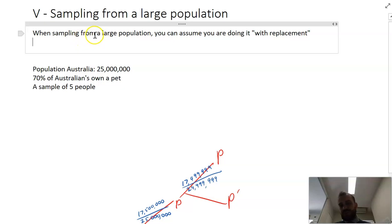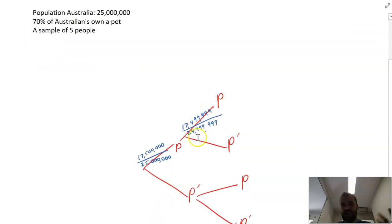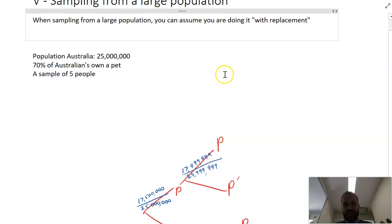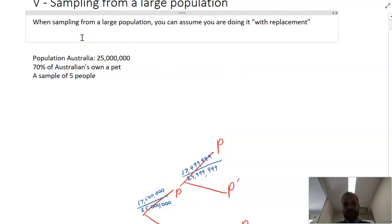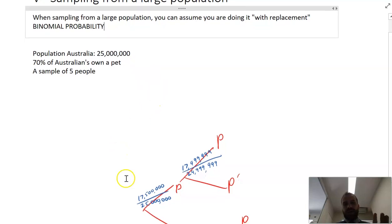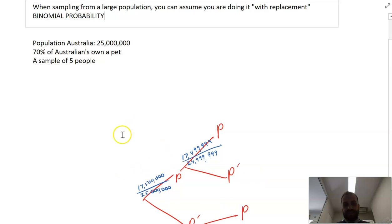Sampling from a large population you can assume you are doing it with replacement. That is, the probability doesn't change from trial to trial to trial. And in this case because there's success or failure, pet or no pet, and because the probability is not changing, we can really just assume that it is a binomial probability. And binomial probabilities are way, way easier to work with than this mess.